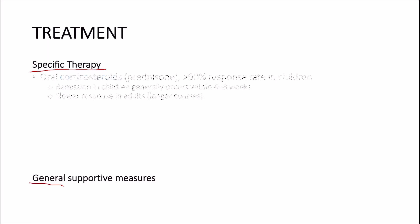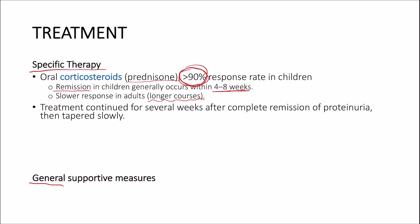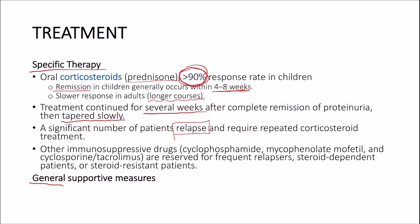Treatment of minimal change disease includes specific therapy and general measures. Specific therapy is with oral steroids such as prednisone, with over 90% of children responding to steroids. Remission of the proteinuria in children generally occurs within 4 to 8 weeks of treatment, but in adults the response is slower, requiring longer steroid courses. After remission, treatment should be continued for several weeks and then tapered slowly. A significant number of patients experience relapses and require repeated corticosteroid courses. Those who are frequent relapsers, steroid-dependent, or steroid-resistant require treatment with a second-line immunosuppressive drug such as cyclophosphamide.